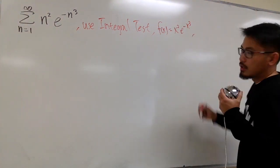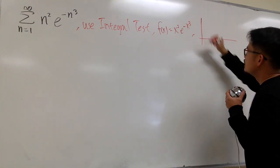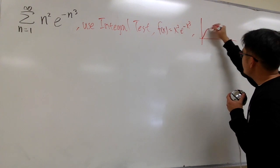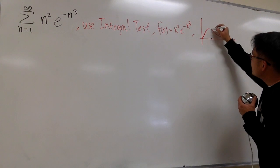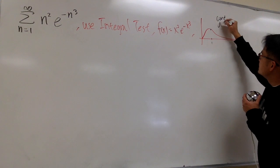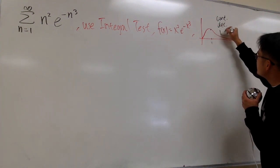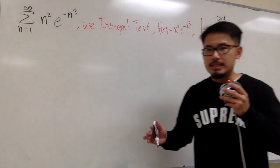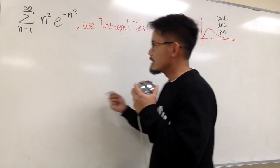You can verify these by supplying a graph — draw a graph on the side and graph this function. We just care about the right-hand side. You'll see that for x ≥ 1, this portion of the graph is continuous, it's going down so it's decreasing, and it's above the x-axis so it's positive. We will focus on the improper integral part, but for the integral test, that's what we have to confirm.